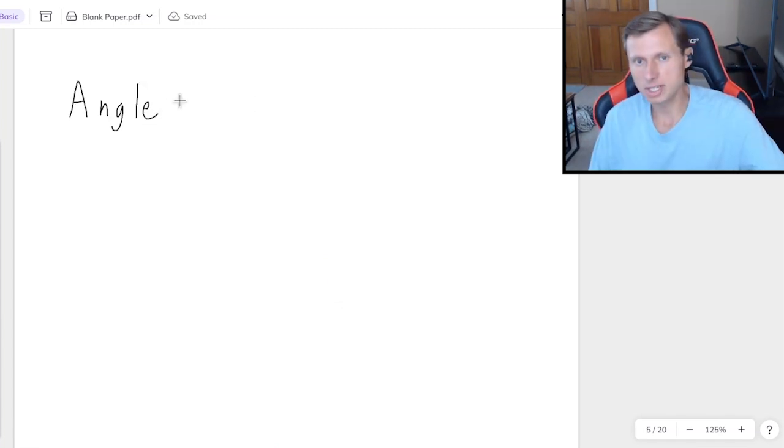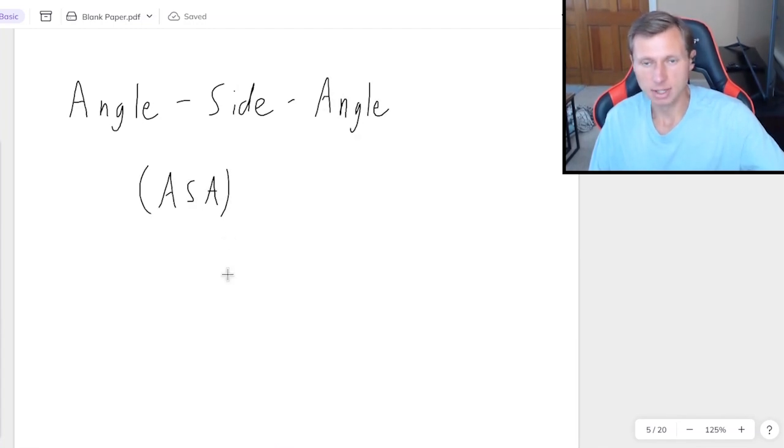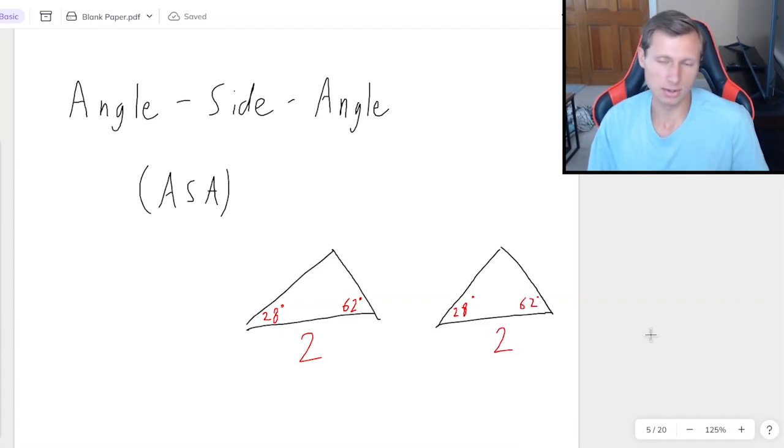The next one very similar to that is angle side angle, or ASA. And that would be something like this, where I need two angles. Let's say this one and this one. And then I need the side in between them. So maybe that's two. And again, I just match it up to the same angles and the same sides on the other triangle. And that's ASA.